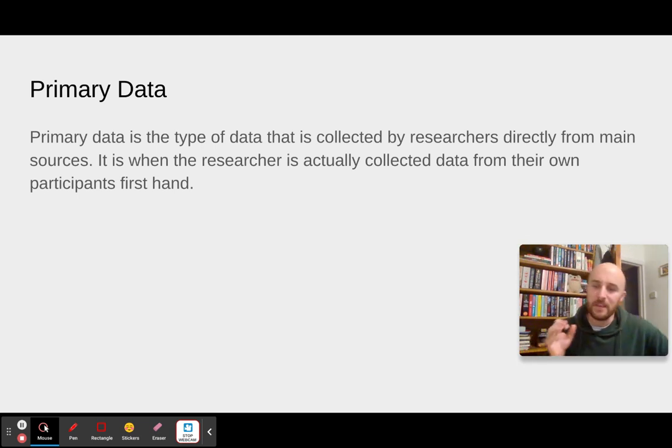Now the reason why this is so important is if you ask people to describe primary data most of the time they say something like, oh it's when the researcher collects the data themselves. But that's not specific enough and actually does apply to secondary data as well. In secondary data the researcher is collecting their data themselves, it's just that they weren't the original ones to do that and they're not doing it first hand from participants. So that idea about directly from participants first hand is actually incredibly key. You don't write that, you ain't getting the marks.